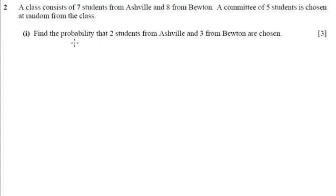So we want to choose, and it's a probability question. We want to choose two students from Asheville and there's seven to choose from. So that's 7C2, and we want to choose three from Bewton and there's eight to choose from.